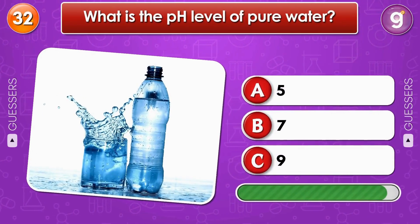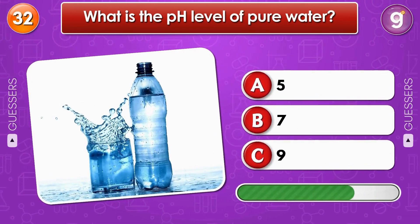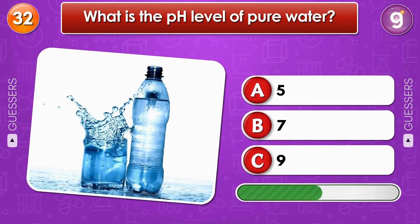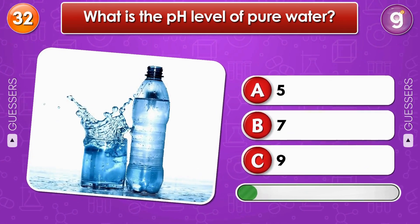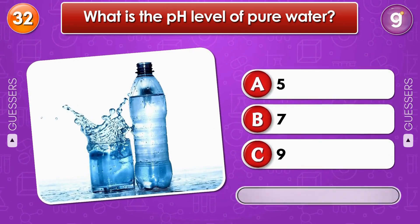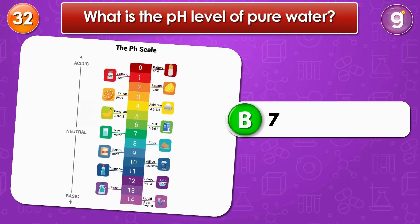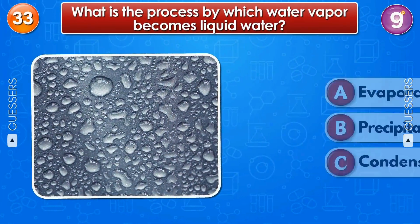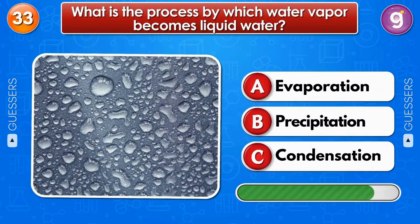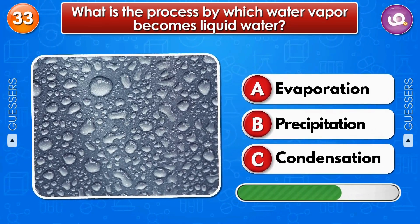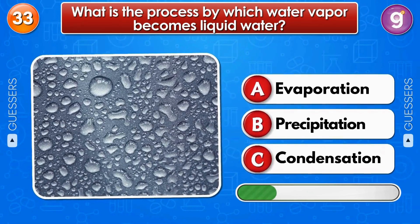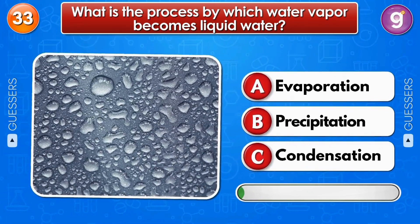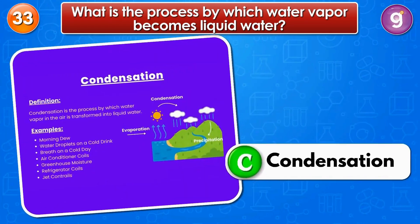What is the pH level of pure water? 7. What is the process by which water vapor becomes liquid water? Condensation.